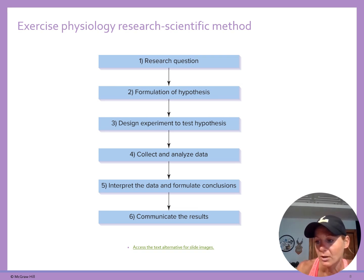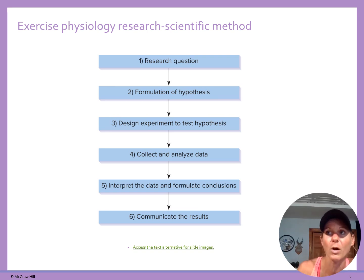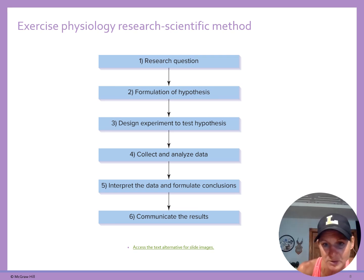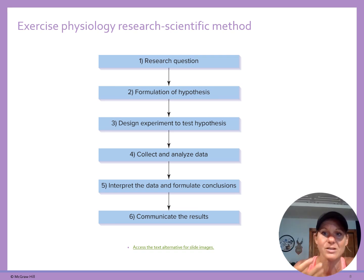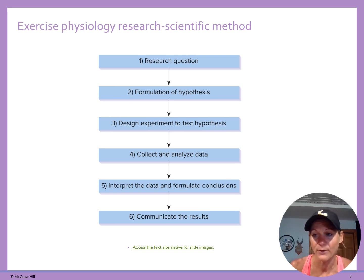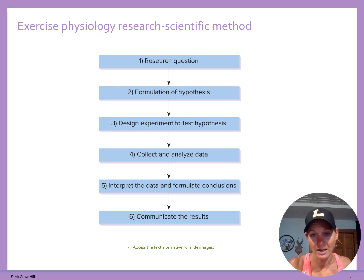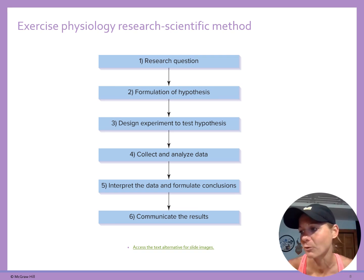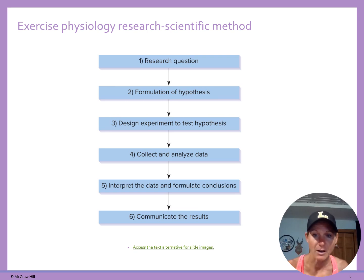The next step after communicating results is figuring out what to do next to push things forward. If we find that grit is an important predictor of retention in sport, my next question is: what can I do as a coach to increase grit levels in my athletes? If it's not found to be significant, what are some good predictors of whether or not an athlete will stay out for sports? Maybe there are other variables we need to look at.